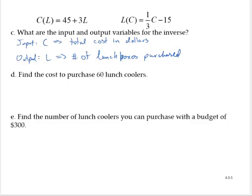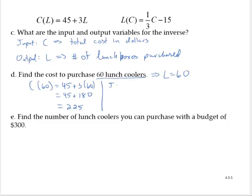Part D: Find the cost to purchase 60 lunch coolers. So if we have 60 lunch coolers, that implies that L = 60. Now if we want to find the cost, generally what we do is substitute L in the original function. So we would have C(60) = 45 + 3(60). And so that would be 45 + 180, which is 225. So it will cost $225 to purchase 60 coolers.